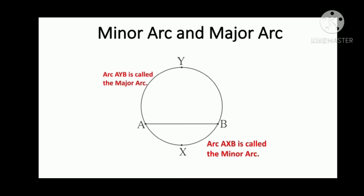Minor arc AXB is also expressed as arc AB. If two arcs of a circle have common endpoints, in this figure the common endpoints are point A and point B, and the arcs make one complete circle, the arcs are said to be corresponding arcs.